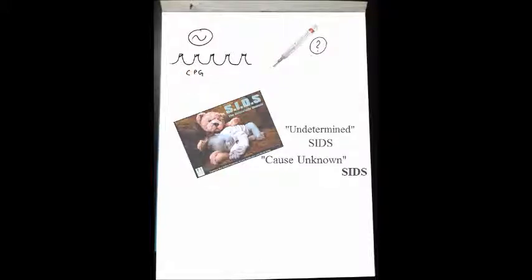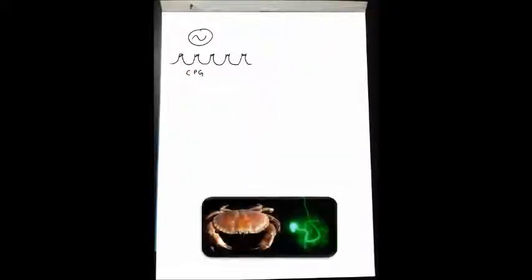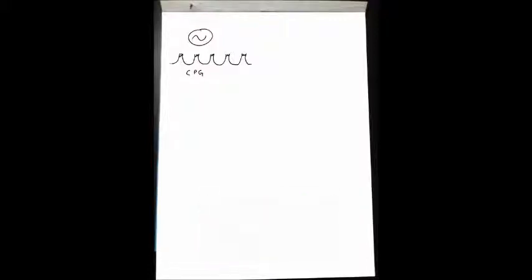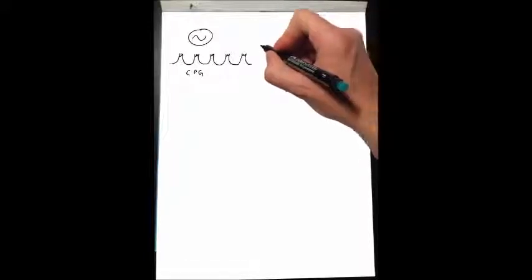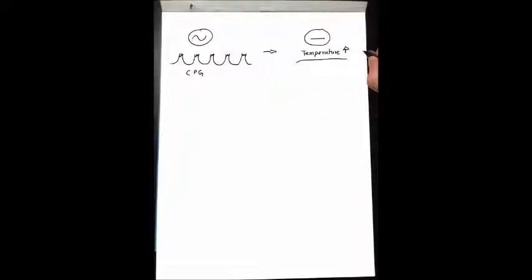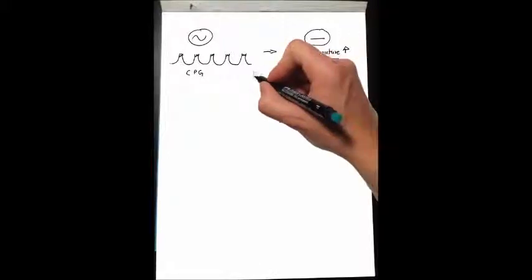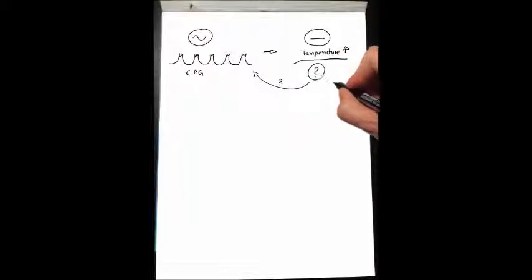We are using a CPG in the crustacean nervous system as a model to study temperature effects on CPG. In our experiments, we used a rhythmically active CPG and increased the temperature by only a few degrees and immediately observed that rhythmic activity stopped. I am going to depict this here with a flat line. We then set out to test why rhythmic activity failed and how to revert the effects.